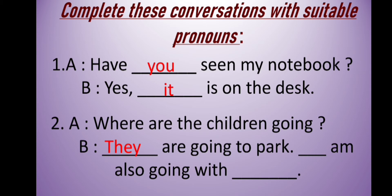In the next blank, you can see 'am' is there, so we will use 'I' here. In the last blank we need the object of the sentence. We are talking about children, so the answer will be 'them,' because we need the object. The final answer is: 'they are going to park. I am also going with them.'